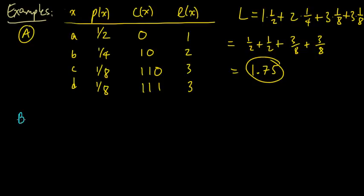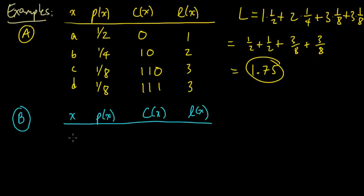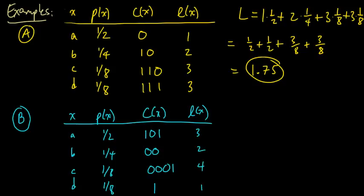Let's do another one, let's do our example B. So here we had, let's take the same probabilities, we also have a, b, c, and d, and we'll take the same probabilities one half, one quarter, one eighth, one eighth. And now our code words were 101, 00, 0001, and 1. And so of course the lengths are 3, 2, 4, and 1.